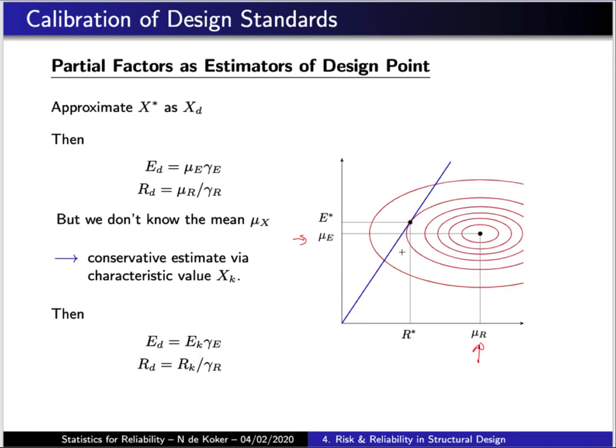In reality, we want to be able to apply the same partial factors to a broad range of conditions, and we generally don't know what the mean values are, so instead we use conservative estimates for their values, which are generally referred to as characteristic values or sometimes nominal values.